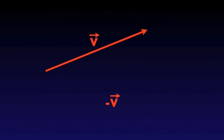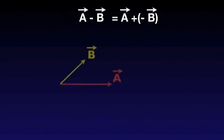Minus V is a vector that has the same magnitude as V, but opposite direction. Let's get back now to vector subtraction. We define the difference A minus B of two vectors as the vector sum of A and minus B.